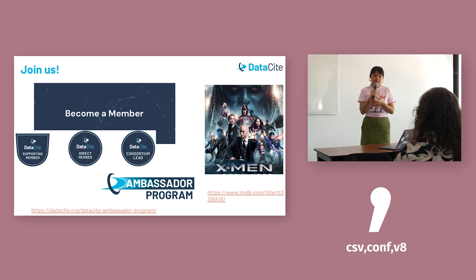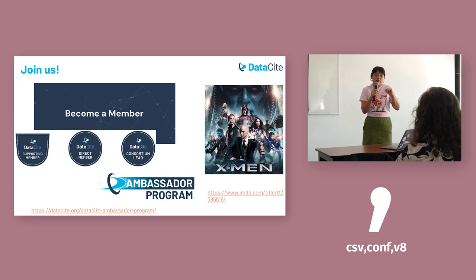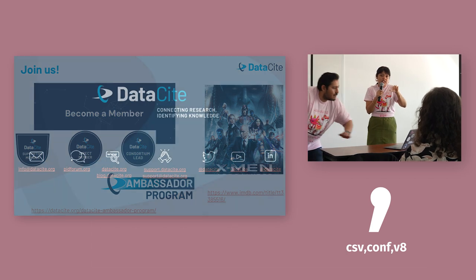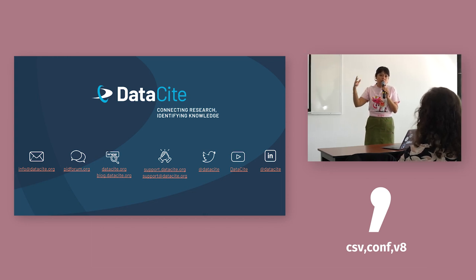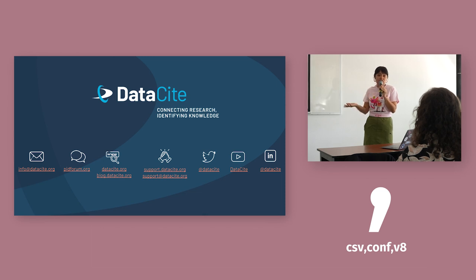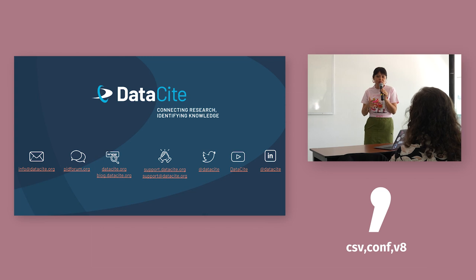We also have members that don't have the capacity or resources to develop an API integration, so we have a manual user interface called Fabrica. With that, members can fill in a form with the metadata fields and register DOIs. There are also many third-party systems that have our API integrated — like OJS for journals, Dataverse for repositories, DSpace, Invenio, and more. So there are three ways to register DOIs.